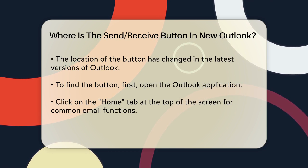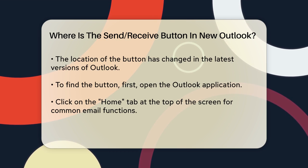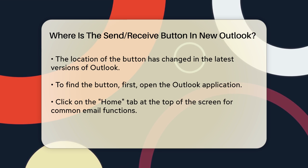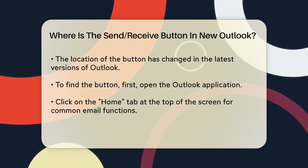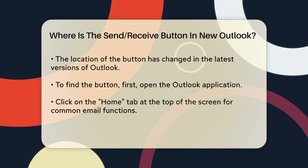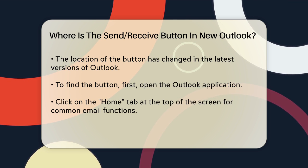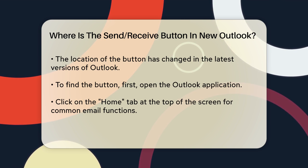Here's what you do. Step 1: Open Outlook — start by opening your Outlook application. Step 2: Go to the Home tab — click on the Home tab at the top of the screen. This is where most of your common email functions are located.